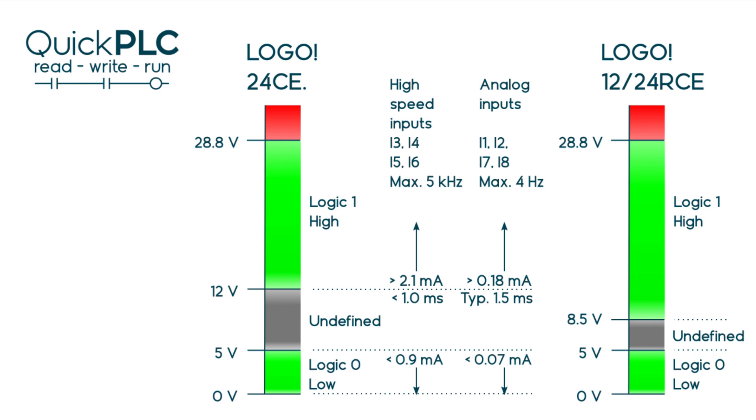DC high speed inputs can handle 5 kilohertz. All other inputs can only handle 4 hertz. And 24 volts DC is now the most common industrial control voltage.